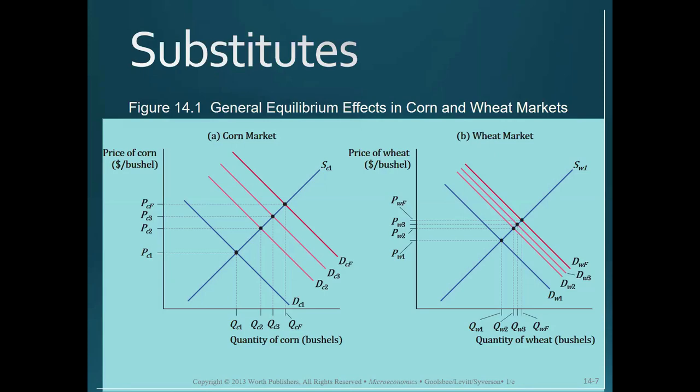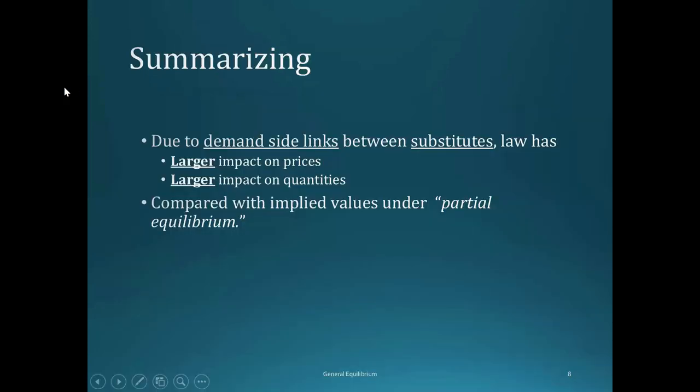If you found this a little bit unclear, I encourage you to rewatch the last few minutes of this video where I go over the graph. To summarize: due to the demand-side links between substitutes, in general equilibrium this law change had an even larger impact on prices and quantities than would be predicted using partial equilibrium analysis, which ignored the dependencies between the markets for corn and wheat.